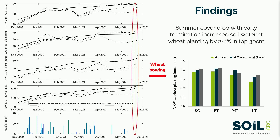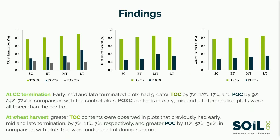We have some interesting results, but due to time constraints I'll just show a few important ones. The termination time of summer cover crop affected soil water at sowing time of winter wheat, with greater soil water storage observed in the early terminated plots. We also found that the impact of cover crop termination on soil total organic carbon and labile organic carbon varied in different treatment plots due to different residual inputs.